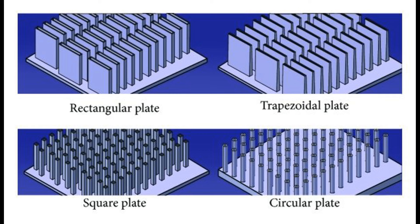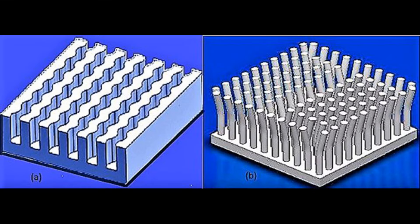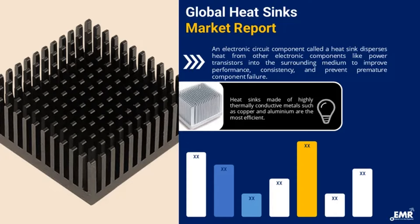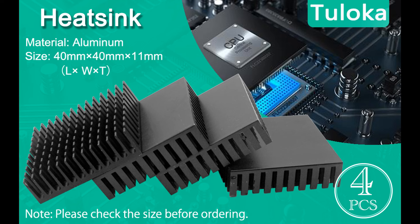Effective thermal management may also involve the use of thermal interface materials, such as thermal paste or thermal pads, to improve heat transfer between components and heat sinks. Thermal management systems often incorporate temperature sensors and control mechanisms to monitor component temperatures and adjust cooling solutions accordingly, ensuring the device operates within safe temperature limits under varying workload conditions. Thermal management strategies may also need to account for environmental factors such as ambient temperature, humidity, and altitude, which can affect cooling efficiency.